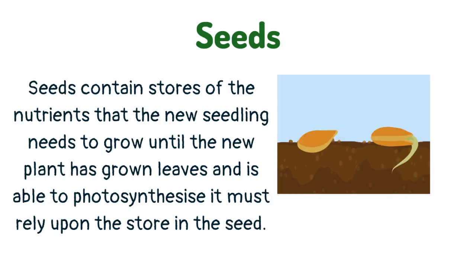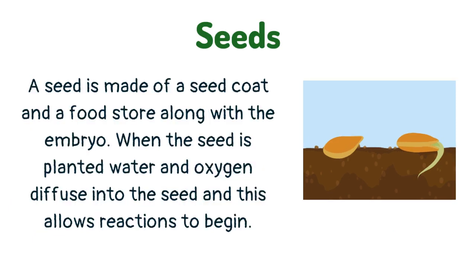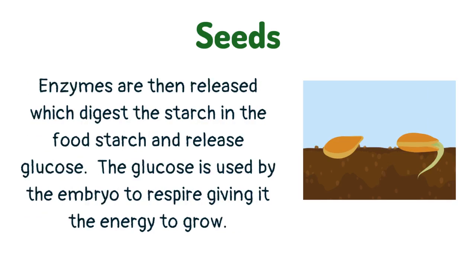Seeds contain stores of the nutrients that the new seedling needs to grow. Until the new plant has grown leaves and is able to photosynthesize, it must rely upon the store in the seed. A seed is made of a seed coat, a food store, and an embryo. When the seed is planted, water and oxygen diffuse into the seed and this allows reactions to begin. Enzymes are then released which digest the starch in the food store and release glucose. The glucose is used by the embryo to respire, giving it the energy to grow.